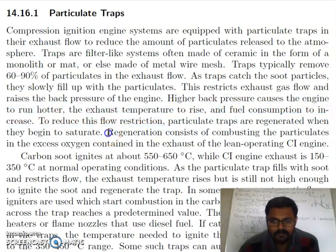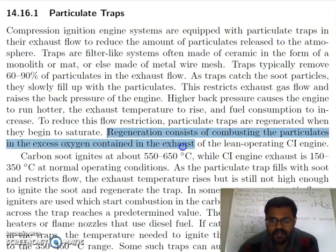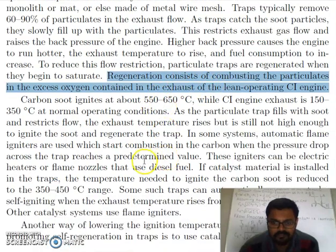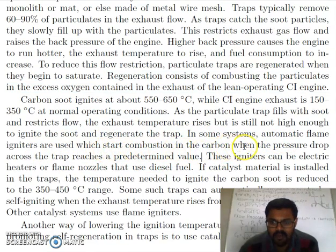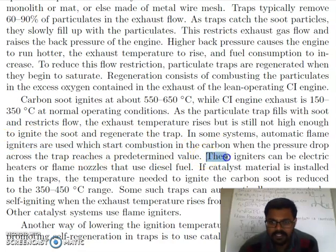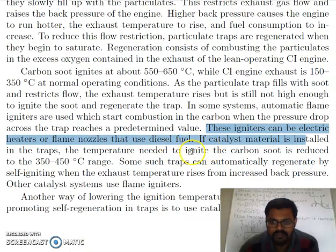To reduce the flow restriction, particle traps are regenerated when they begin to saturate. Regeneration consists of combusting the particulates in excess of oxygen contained in the exhaust of a lean-operating CI engine — we burn the trapped particles and then reuse the trap. In some systems, automatic flame igniters are used, which start combustion in the carbon when the pressure drop across the trap reaches a predetermined value. We have a pressure measuring system that monitors the pressure drop across the trap, and at some point the igniter starts and burns all those particles. These igniters can be electric heaters or flame nozzles that use diesel fuel.